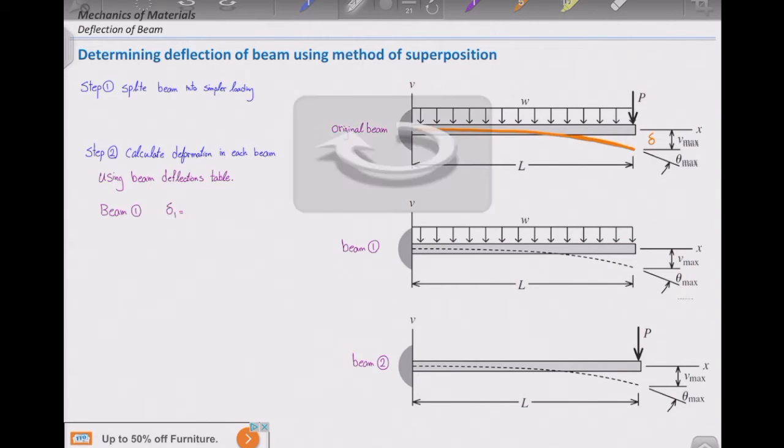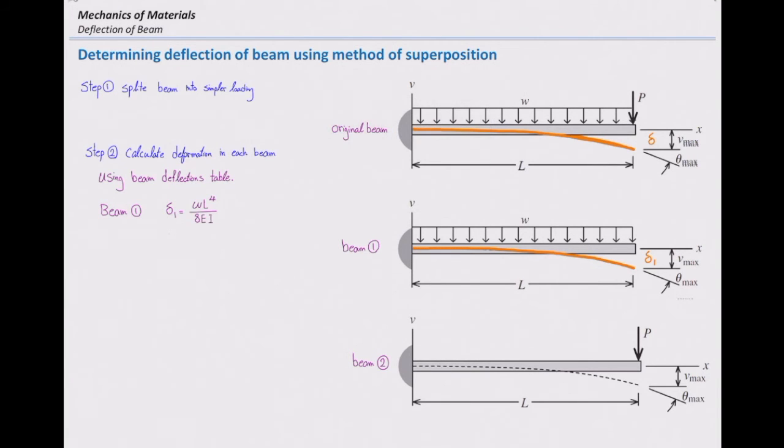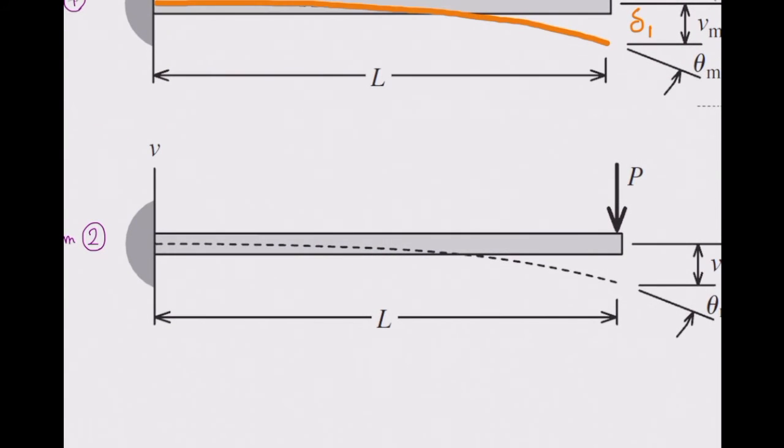So that is WL to the fourth over 8EI. So in beam number one, the value of deflection at that end is WL to the fourth over 8EI. And I can do the same for the second beam. In the second beam, I'm looking for the deflection at the same point, but with different loading.